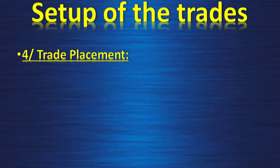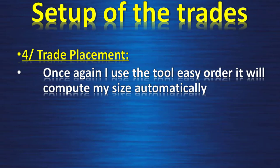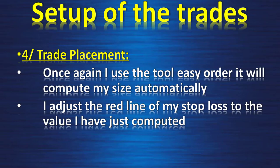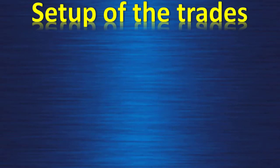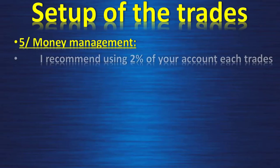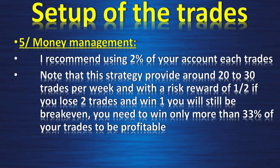For trade placement, I use the tool Easy Order — it will compute my size automatically. I adjust the red line of my stop-loss to the value I have just computed. For money management, I recommend using 2% of your account per trade, no more. This strategy provides around 20 to 30 trades per week. With a risk-reward of 1-to-2, if you lose 2 trades and win 1 you will still break even — you need to win only more than 33% of your trades to be profitable.